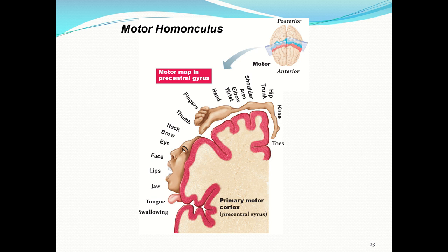The motor homunculus maps the parts of the primary motor cortex that innervate certain areas of the body. Most innervation goes to the hands and face, which use small motor units activated quickly for single muscle twitches, aiding in hand dexterity and facial muscle movement important for seeing, eating, speaking, and communicating.